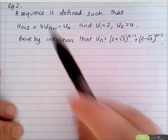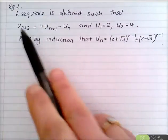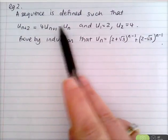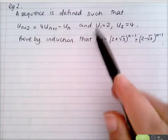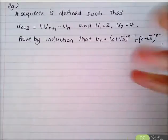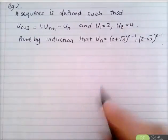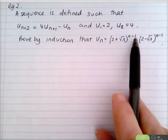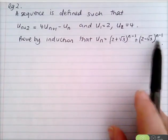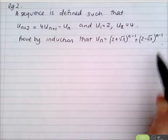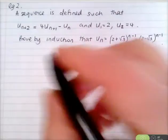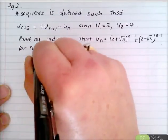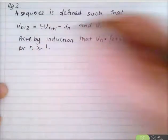Second example. A sequence is defined such that u_{n+2} = 4u_{n+1} − u_n, with u₁ = 2 and u₂ = 4. Prove by induction that u_n = (2 + √3)^{n−1} + (2 − √3)^{n−1} for n ≥ 1.